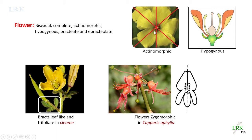The flowers are hypogynous — all other parts such as stamens, petals, and sepals develop from below the gynoecium, so the position of the ovary is superior. They are also ebracteolate — bracts are present on the peduncle but not on the pedicels. In Capparis aphylla, zygomorphic flowers are seen; zygomorphic flowers show bilateral symmetry, meaning they can only be divided into two equal halves in one plane.